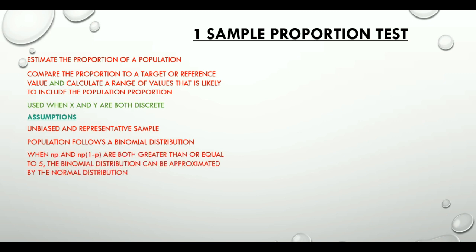Also, if mean and variance (that is NP and NP into 1 minus P) for a binomial distribution are both greater than or equal to 5, the binomial distribution can be approximated by the normal distribution.